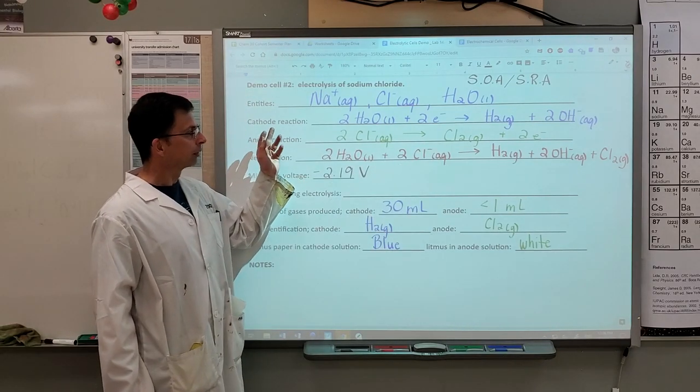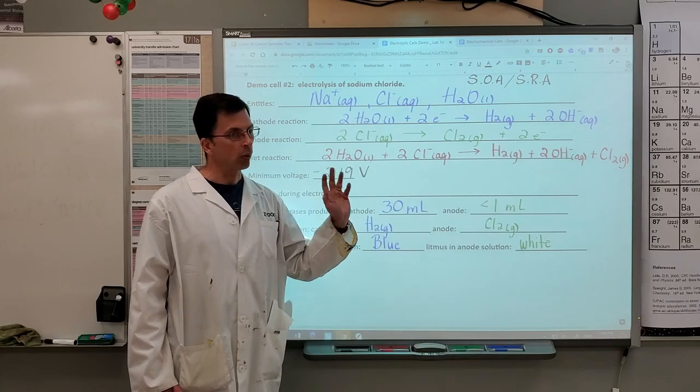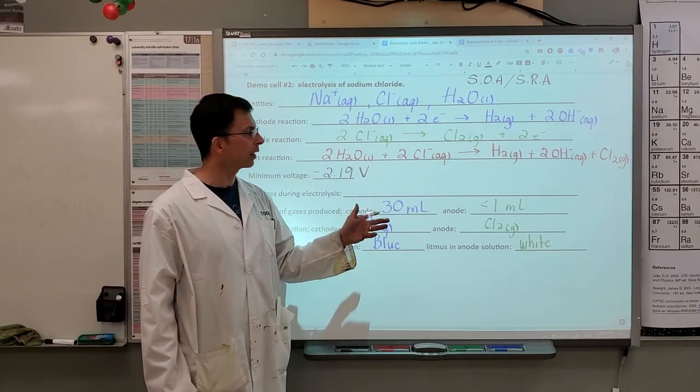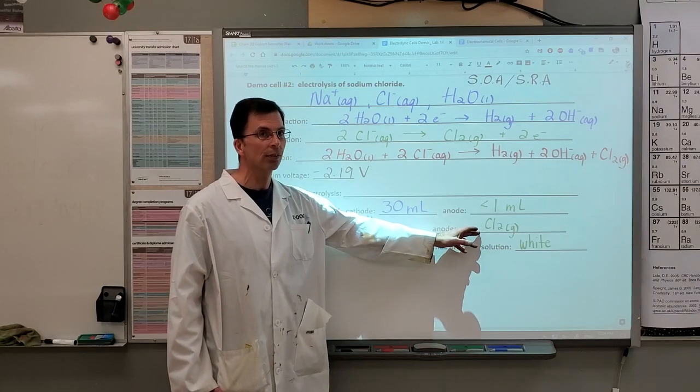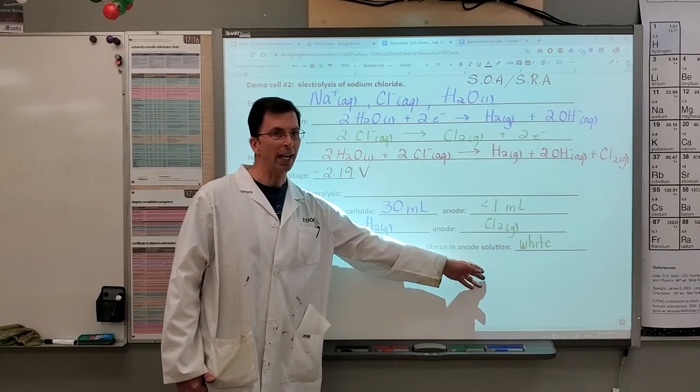At the anode, we had less than one milliliter of that gas. The gas was not oxygen. That was not verified by the glowing splint test. It was in fact chlorine gas. Chlorine gas dissolved in water is turning our litmus paper white. And that's the effect of bleach on many papers and textiles is to turn that white.